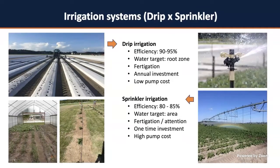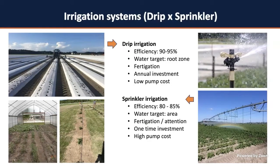Drip irrigation also allows for fertigation — you can inject fertilizer through your drip line precisely into the root zone. With sprinkler you can also fertigate, but be careful: you may burn your plants if you don't apply the right fertilizer. So far drip is our best option, and for vegetables I will say yes, it's a good option, one of the best — but there are cases where you may require sprinkler.